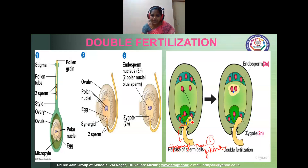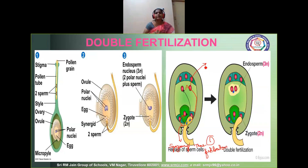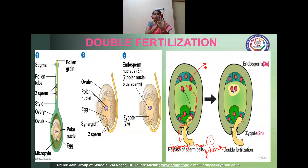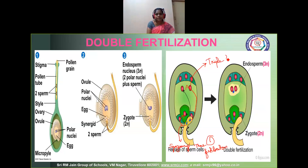The second male gamete goes and fuses with our polar nuclei. This fusion, where the second male gamete fuses with polar nuclei — totally three nuclei fuse there: two polar nuclei plus one male nucleus. So this process, as there is a fusion of three nuclei, is called triple fusion.